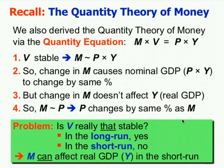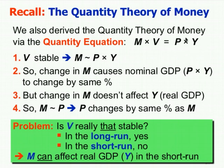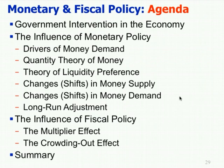What does that mean? If velocity isn't stable and prices are sticky, then you change the money supply and you can actually affect real GDP in the short run — M can affect Y. Because M × V = P × Y has to be true. If M goes up and V can change, and if prices are sticky so P can't fully adjust, then the result can be an increase in Y. The bottom line is that the money supply can affect real GDP in the short run because velocity is stable in the long run but not necessarily in the short run.